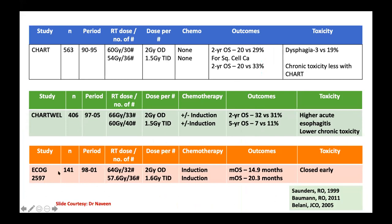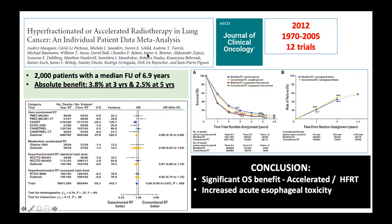ECOG 2597 also closed early but showed some advantage for altered fractionation. The meta-analysis of hyperfractionation in lung cancer published in JCO — 35 years of studies, 12 trials, almost 2000 patients — showed an absolute benefit of 3.8% at three years and 2.5% overall survival benefit at five years. The experimental hyperfractionation arm did significantly better than conventional RT, though acute esophageal toxicity was higher in hyperfractionated arms.